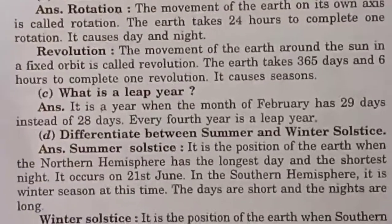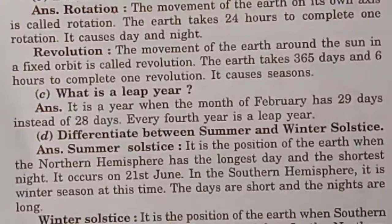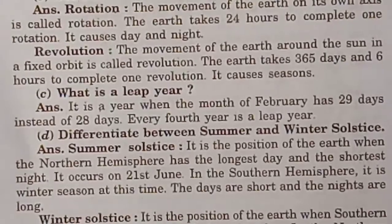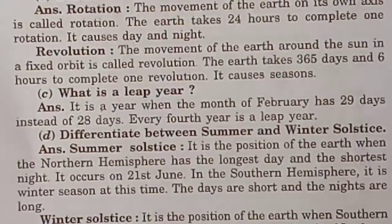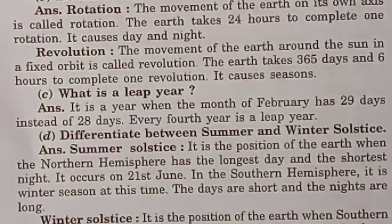What is a leap year? It is a year when the month of February has 29 days instead of 28 days. Every 4th year is a leap year.